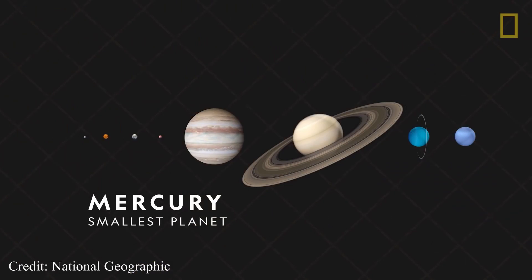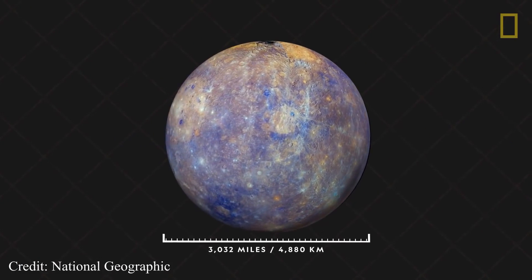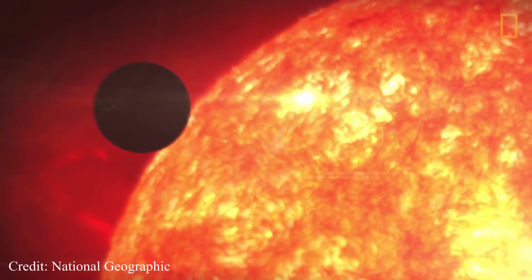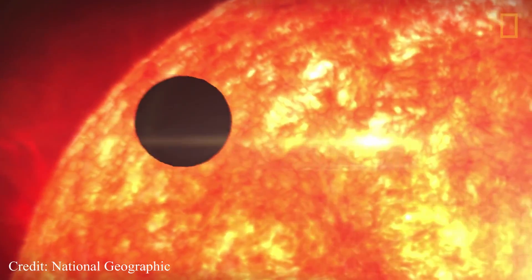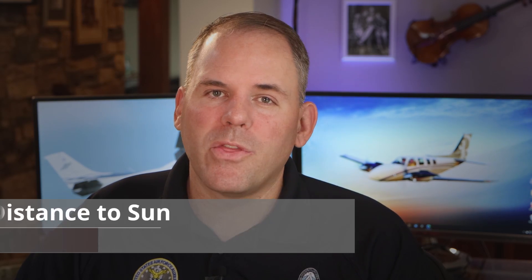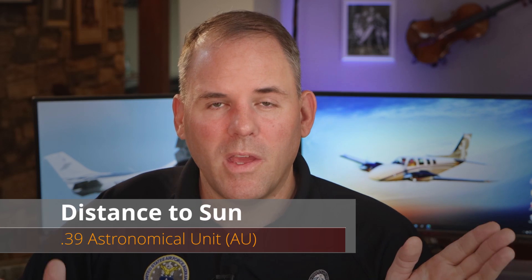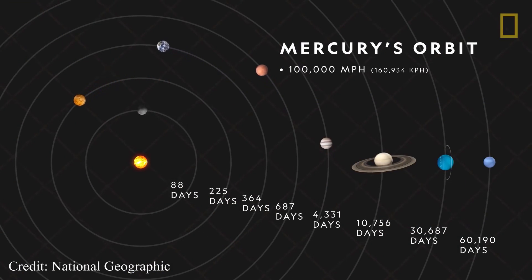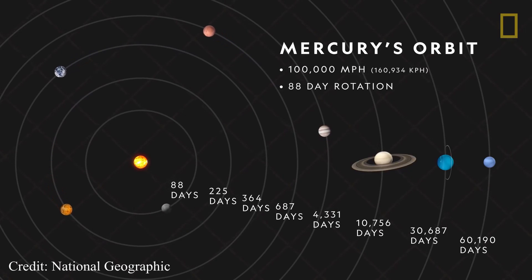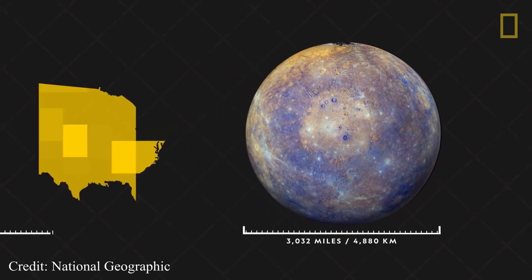We will start with Mercury, the closest planet to the sun. It's 0.39 AU — Mercury is at the 39% mark for the distance between the sun and the earth. Mercury completes its orbit around the sun in just 88 days. Mercury is actually pretty small — only slightly larger than the earth's moon. There are other moons in our solar system that are actually larger than Mercury, but they don't count as planets because they orbit a larger planet instead of developing their own orbit around the sun.